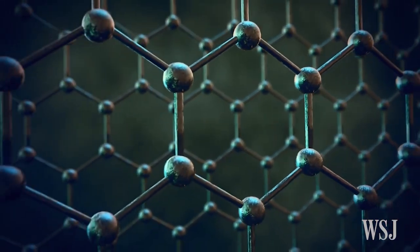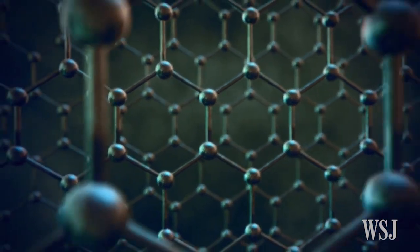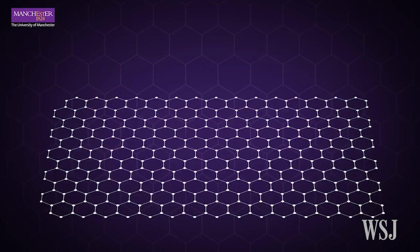Graphene is made from a layer of pure carbon, just one atom thick. It's stronger than steel, yet incredibly light and flexible.